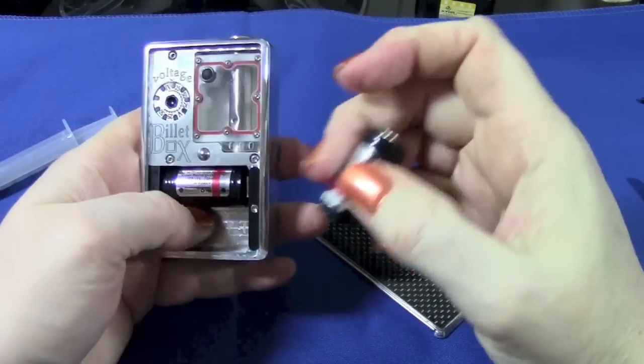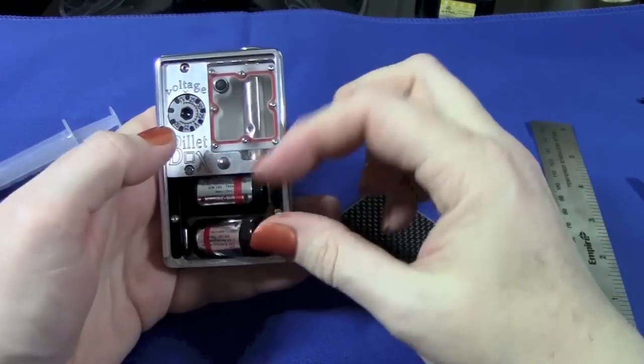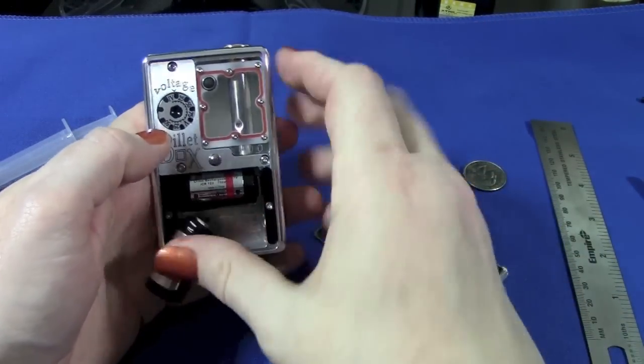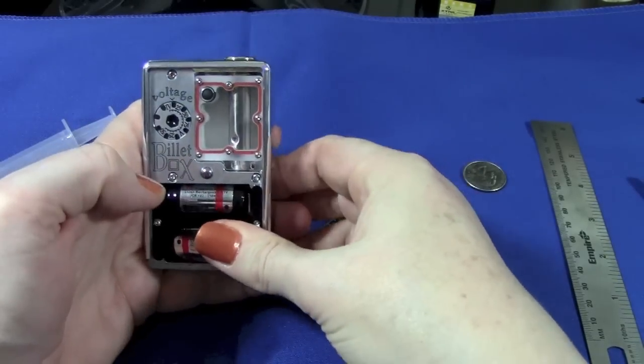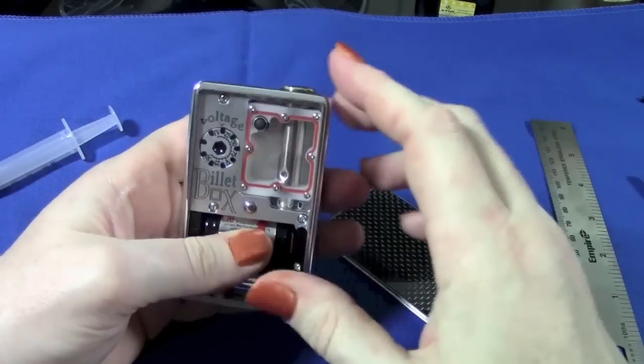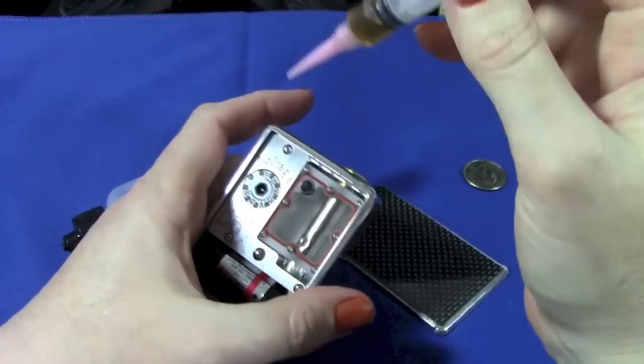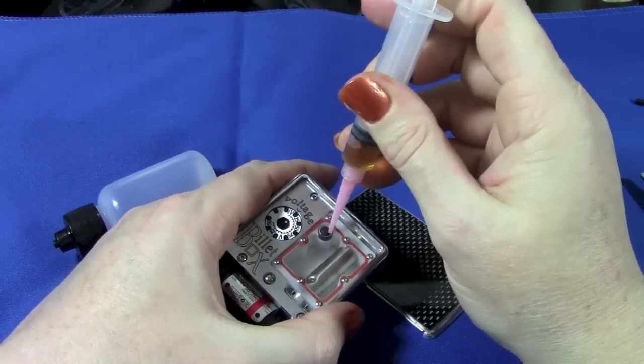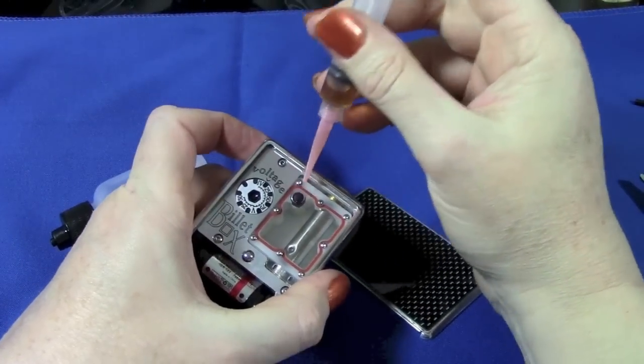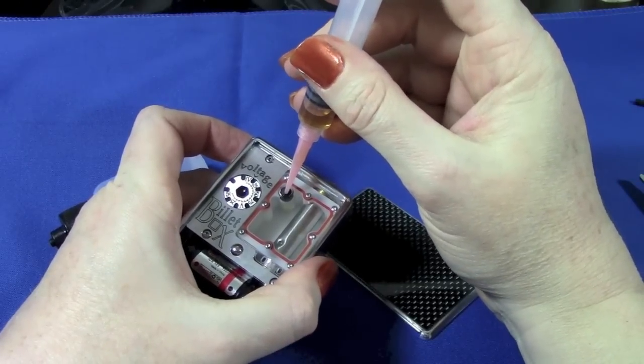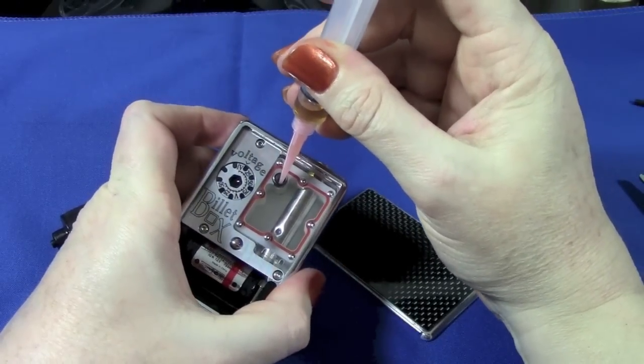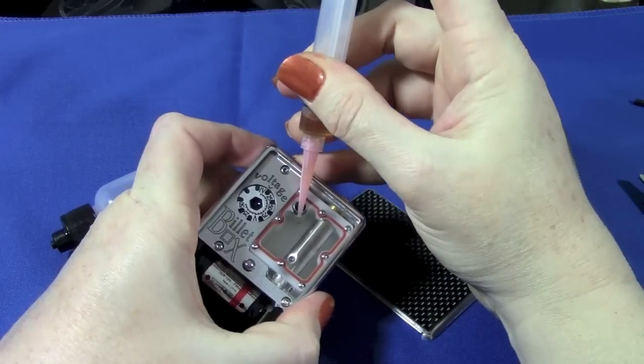Alright, grab some batteries off the charger. Now some batteries are kind of a tight fit in here and were actually hard for me to get out with my fingers, especially these black and silver AW protecteds. Some other brands are not quite as long.